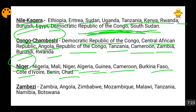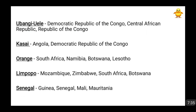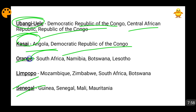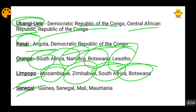The Zambezi River passes through Zambia, Angola, Zimbabwe, Mozambique, Malawi, Tanzania, Namibia, and Botswana. The Ubangi River passes through the Democratic Republic of Congo, Central African Republic, and Republic of Congo. The Kasai River is in Angola and the Democratic Republic of Congo. The Orange River is in South Africa, Namibia, Botswana, and Lesotho. The Limpopo River flows through Mozambique, Zimbabwe, South Africa, and Botswana. The Senegal River flows through Guinea, Senegal, Mali, and Mauritania.